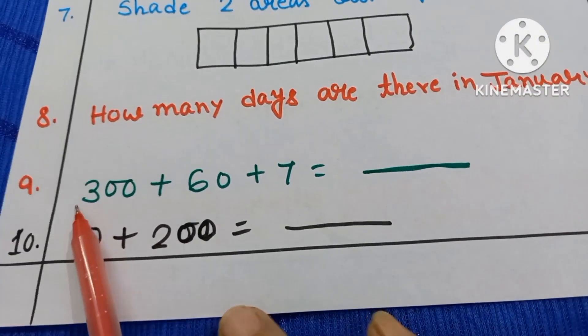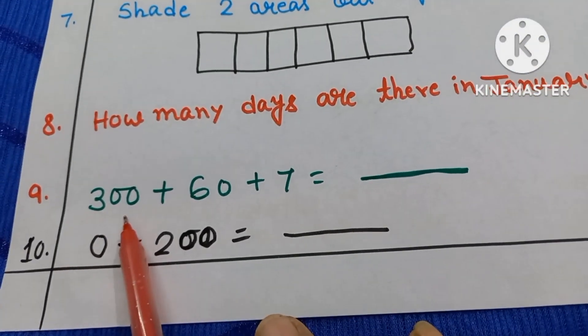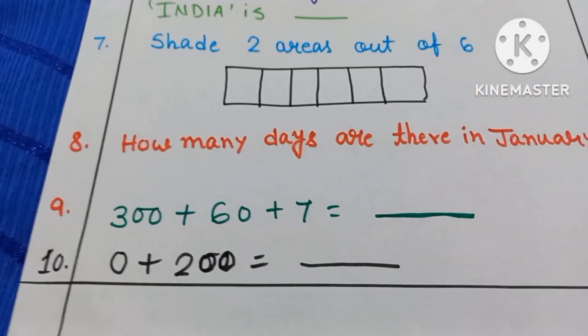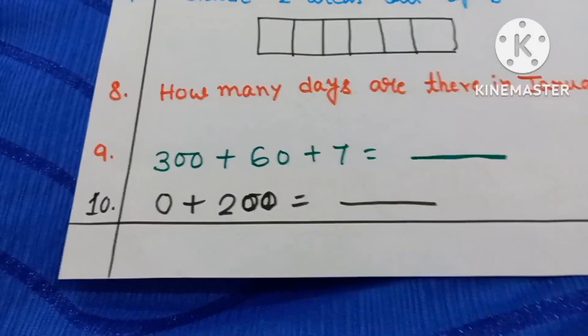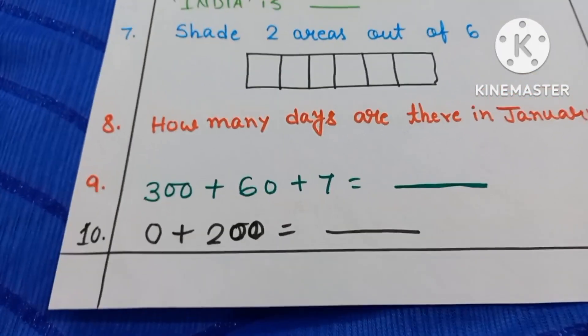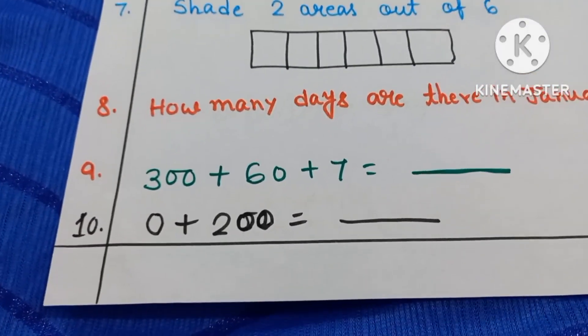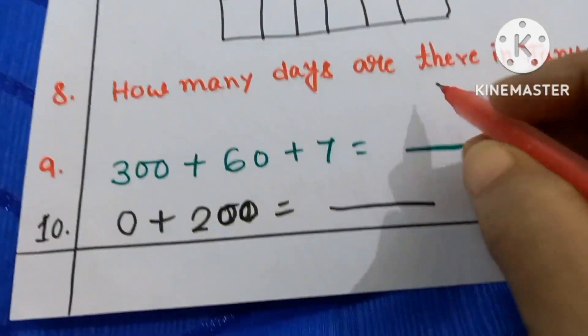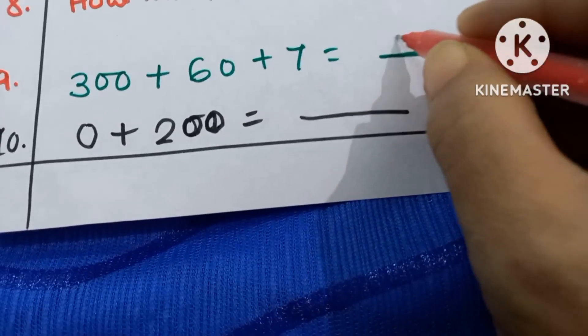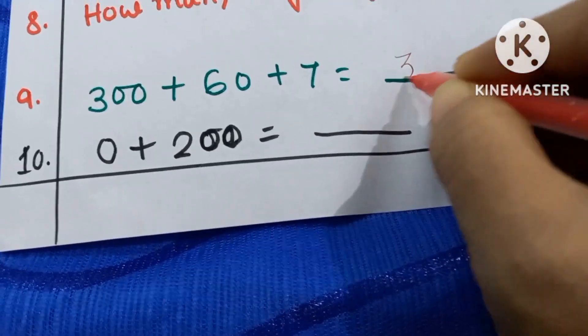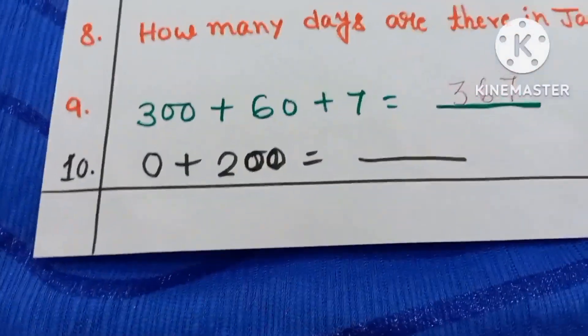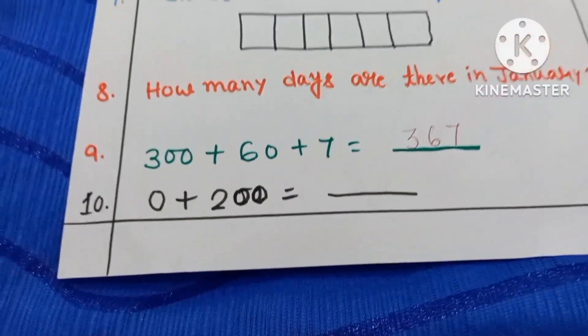Number 9. 300 plus 60 plus 7. So this is called expanded form or you can call place value also. 300 plus 60 plus 7, that means here you have to write 367.